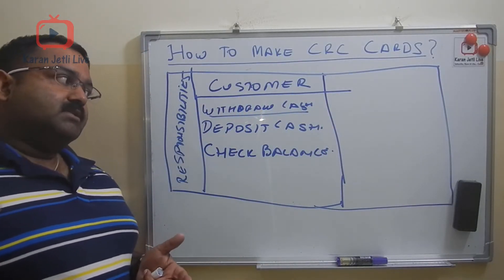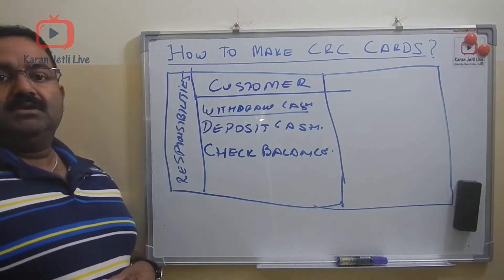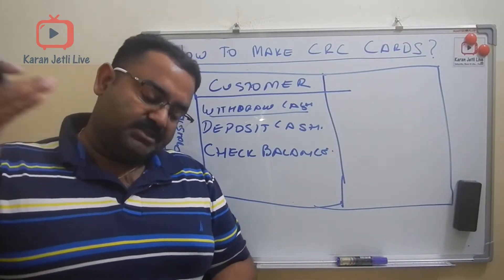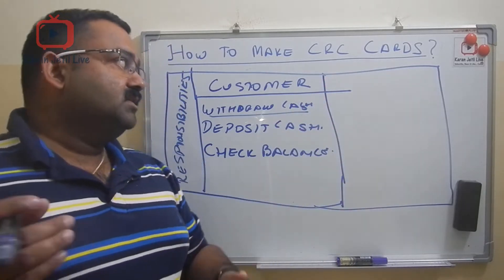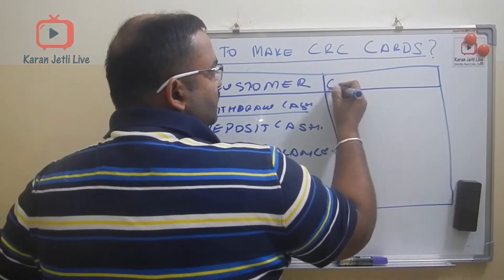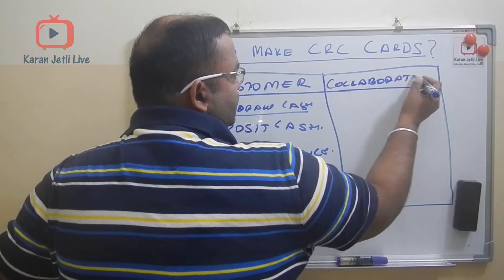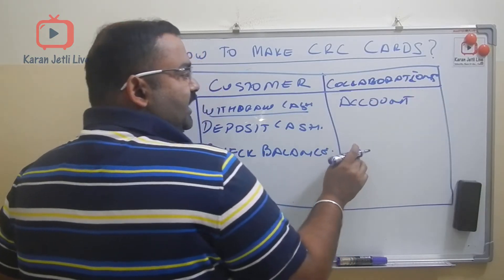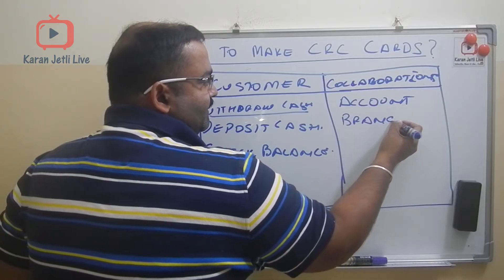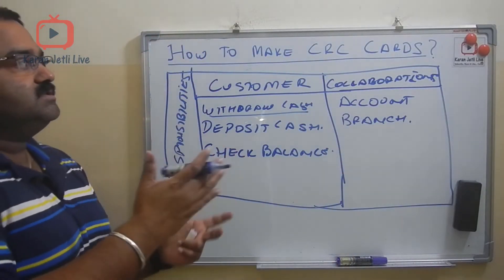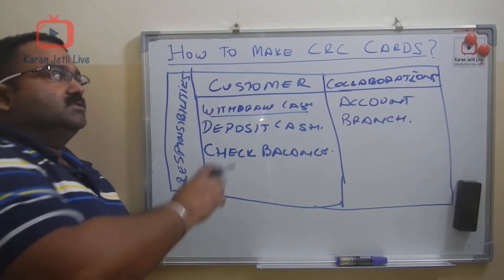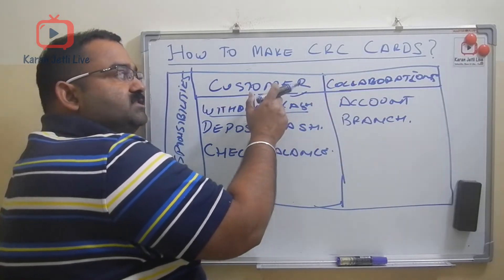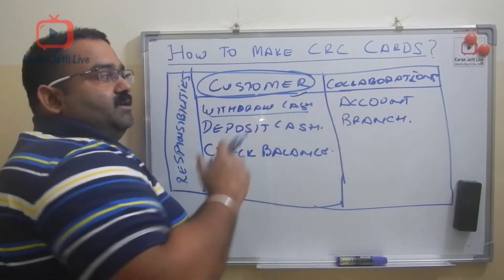To withdraw cash, the Customer needs to associate with other classes. The Customer needs account information from the Account class, and branch information from the Branch class. So the collaborating classes are Account and Branch. This is one side of my CRC card: the class, its responsibilities, and its collaborations.